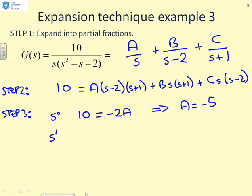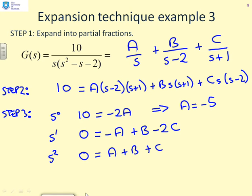If I then do s to the one, I'm going to get 0 on the left equals minus A plus B minus 2C. And if I do s squared, I get 0 on the left equals A plus B plus C. So I can now solve these two linear simultaneous equations. So if I put the 5 in, then minus A is plus 5. So I get 0 equals 5 plus B minus 2C. And over here, I get 0 equals minus 5 plus B plus C.